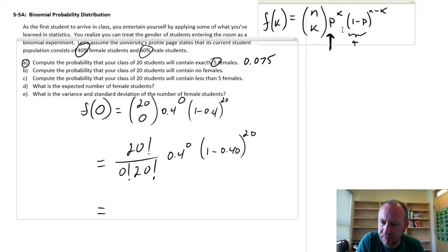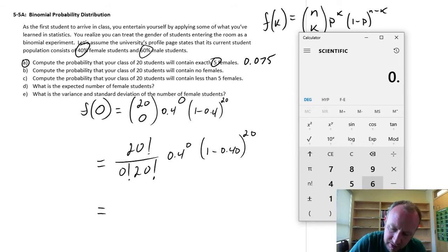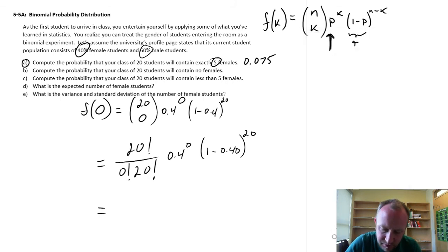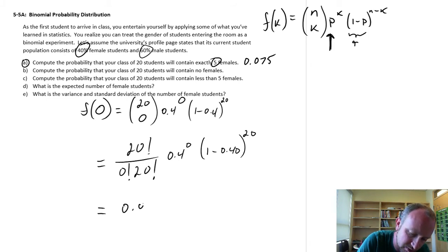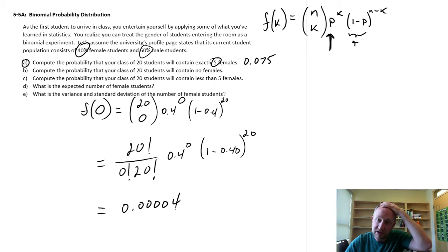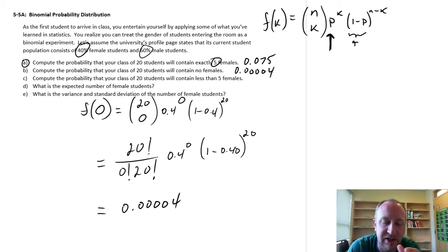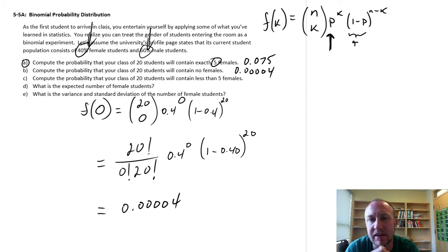So we calculate 0.6 to the power of 20 — very small, four zeros. Rounding to four decimal places: 0.0000. So there's a very small chance that given those probabilities, all 20 students who walk in will be men.